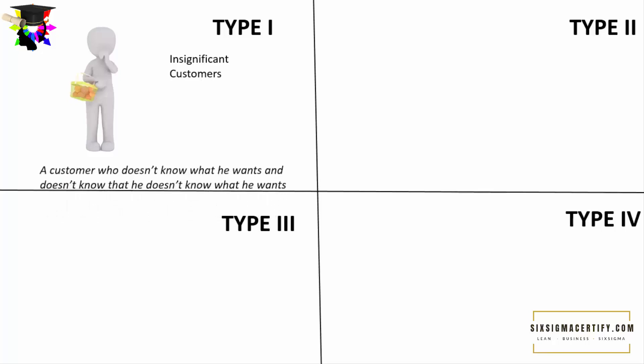We will be learning about 4 types of customers and their behavior: Type 1, Type 2, Type 3, and Type 4. The Type 1 customers are insignificant customers. That means a customer who doesn't know what he wants and doesn't know that he doesn't know what he wants. He is just roaming around, unaware. These types of customers are called insignificant or Type 1 customers.